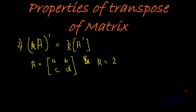Now we will learn the second property. The second property states that a scalar — which is a constant — multiplying a matrix, when transposed, is equal to multiplying the constant with the transpose of the matrix. So a scalar multiplication of a matrix when transposed gives the scalar multiplied by the transpose separately. Let us check it with an example.